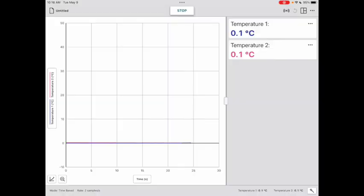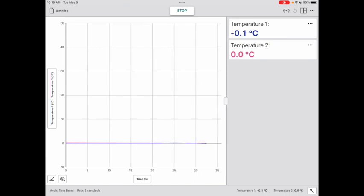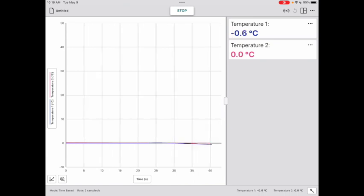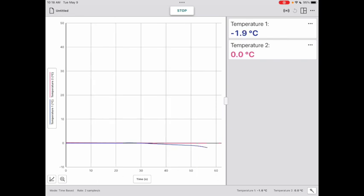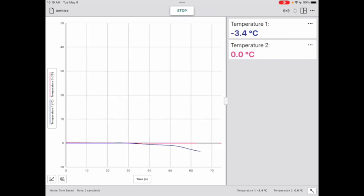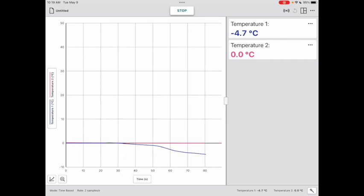Now once again, you've got two temperature probes. And as you can already see, the one that is in blue, which is the one that has salt in it, is dropping. We're already 2 degrees, 3 degrees, 4 degrees below zero, only after about one minute. So as you can see, adding salt to water changes its boiling point and its freezing point.